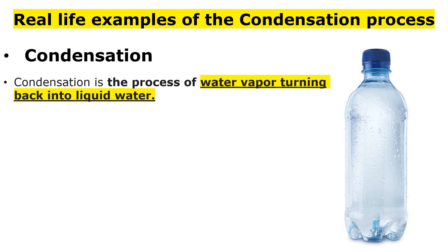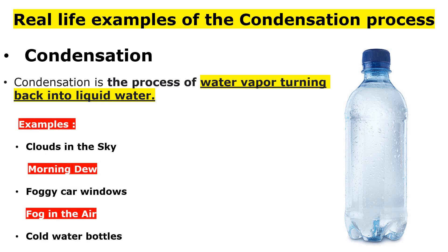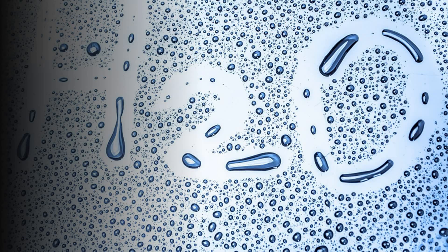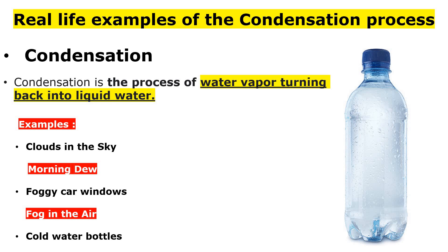Now let's see the real life examples of condensation. The first is clouds in the sky — that is one example of condensation. The second is morning dew: when you go for a morning walk, you see water droplets on the grass — that is an example of condensation. A foggy car window is another example we have seen. Fog in the air is also one example. And the cold water bottle — you can see here this is my cold water bottle, and the water droplets on it are because of condensation.